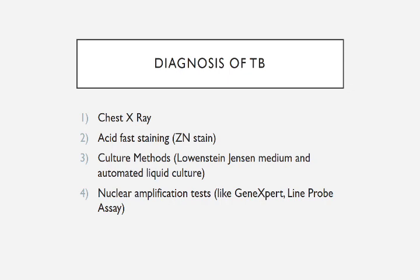Diagnosis of TB: First we do a chest X-ray to rule out or identify the presence of active disease in all screening test positive cases. There is fluffy upper zone shadowing, frequently bilateral and often associated with shadowing. Then we do acid-fast staining using the Ziehl-Neelsen technique. Then there are culture methods — Löwenstein-Jensen medium and automated liquid culture.